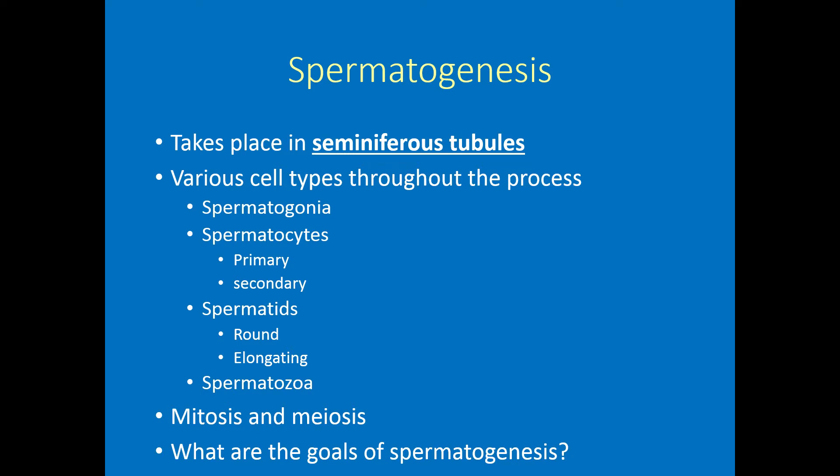Goals of spermatogenesis include producing the male gametes — billions per day — providing a location within the body away from the immune system, which would otherwise target and destroy sperm cells. We have a blood-testis barrier that keeps them protected. Also important is genetic diversity — spermatozoa have what we call the snowflake effect. No two snowflakes are ever exactly identical, and the same applies to spermatozoa. There's a lot of crossing over where DNA is traded between chromosomes, ensuring no two spermatozoa are exactly the same.